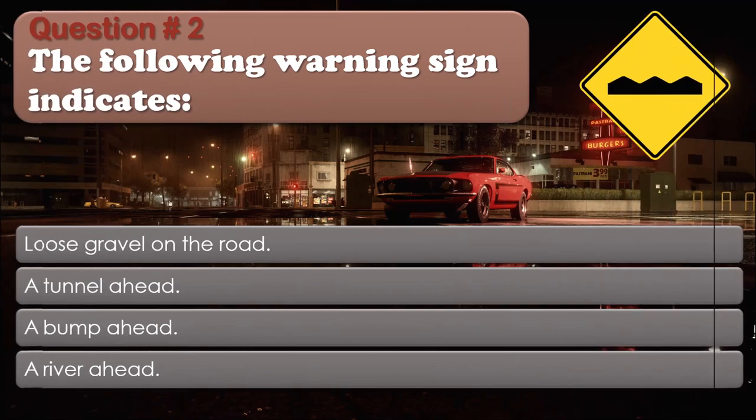Question number 2. The following warning sign indicates: Loose gravel on the road. A tunnel ahead. A bump ahead. A river ahead. The correct answer is: A bump ahead.